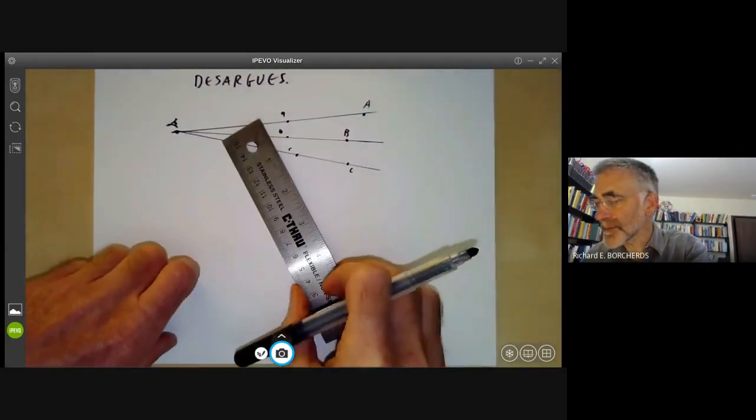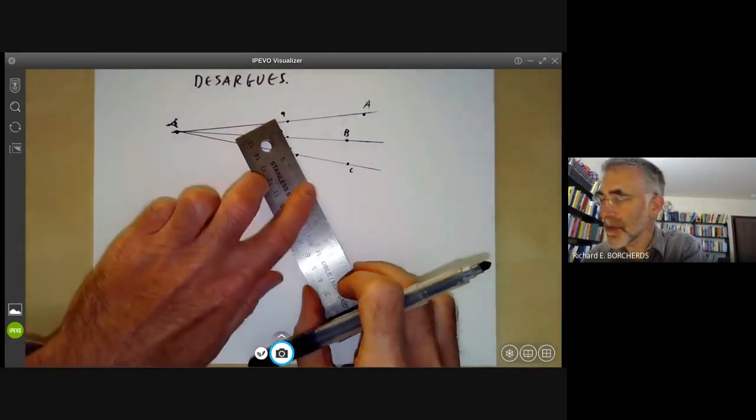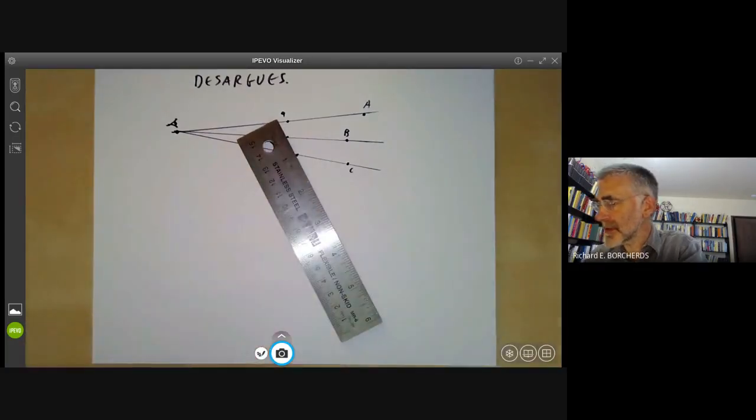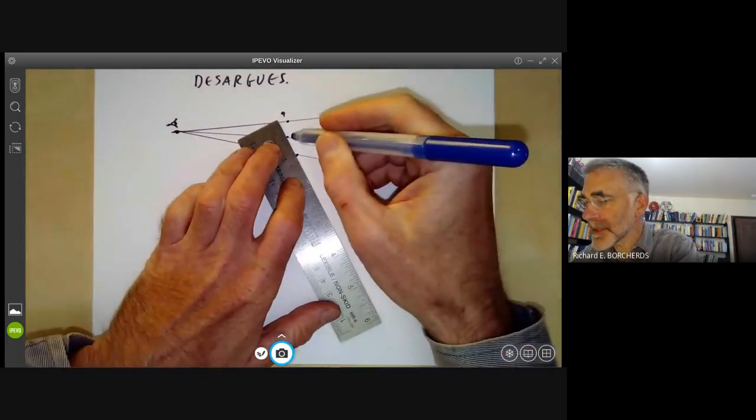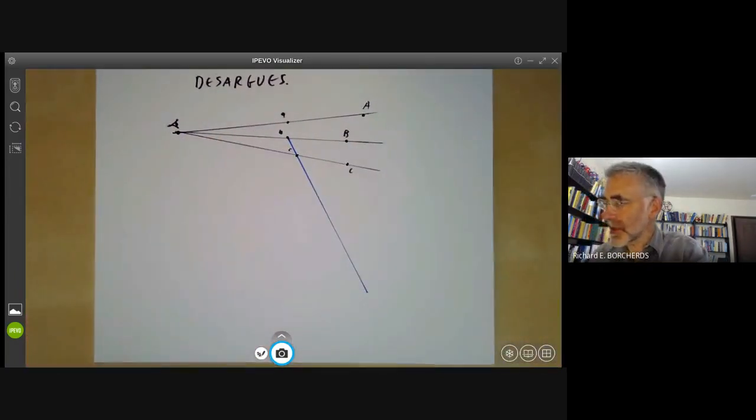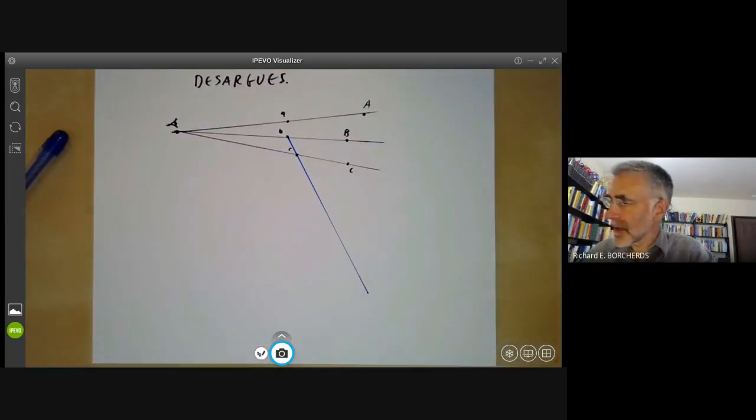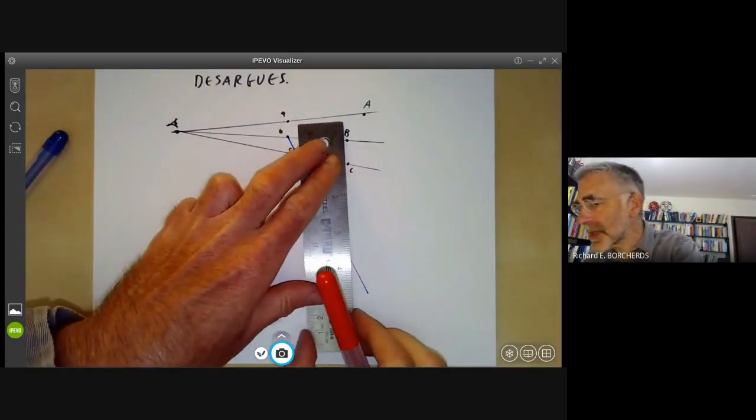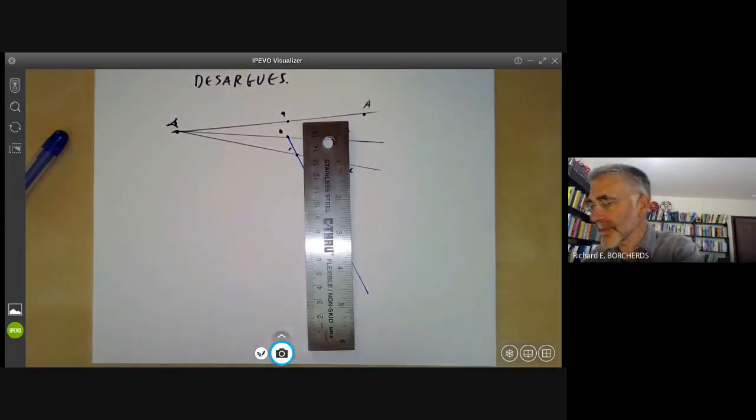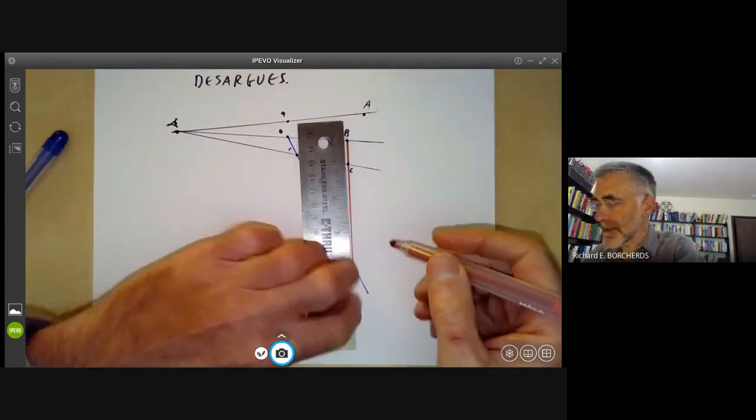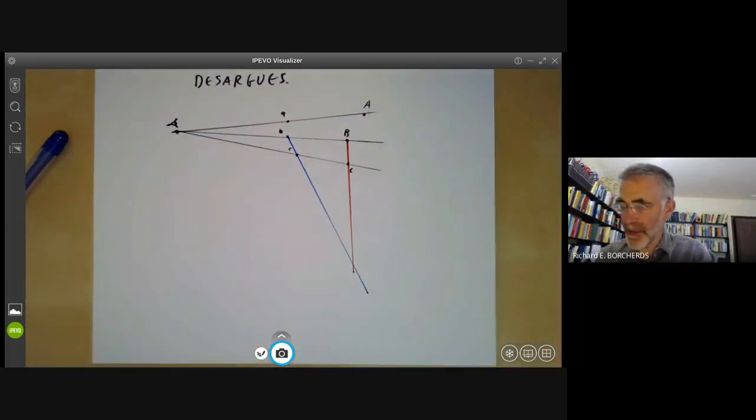What you do is you join up these three triangles like this. So here I'm going to take a blue triangle and a red triangle. I'm going to join up the lines BC of the red triangle. They're going to meet at a point here.